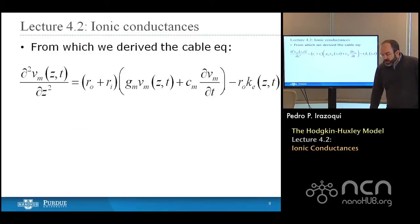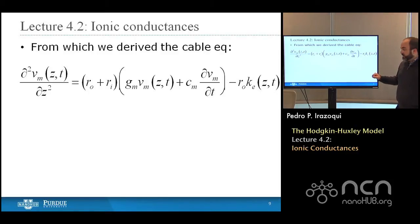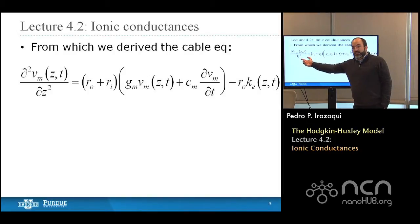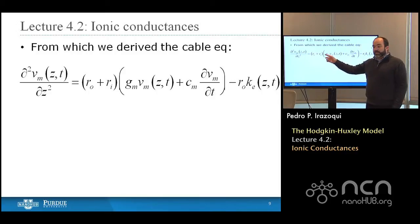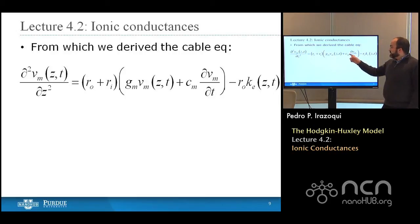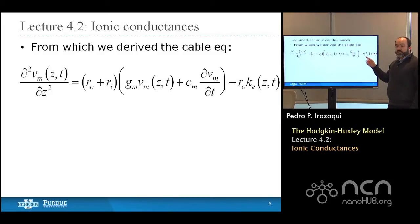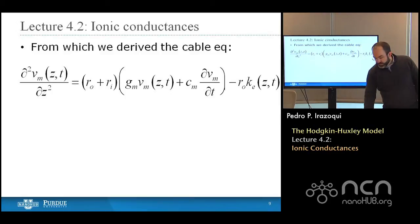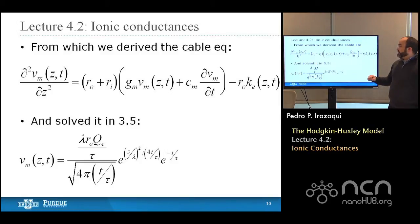Using that equation, we derived the cable equation. We plugged it back into the core conductor equation: the second derivative of the local membrane voltage with respect to distance Z equals Ro plus Ri times the conductivity of the membrane GM, times VM the local membrane voltage, plus CM the capacitance per unit length, times the first derivative of the membrane voltage with respect to time, minus Ro times the externally applied current KE per unit length. This was the cable equation, and we solved it for the time-dependent case in lecture 3.5.